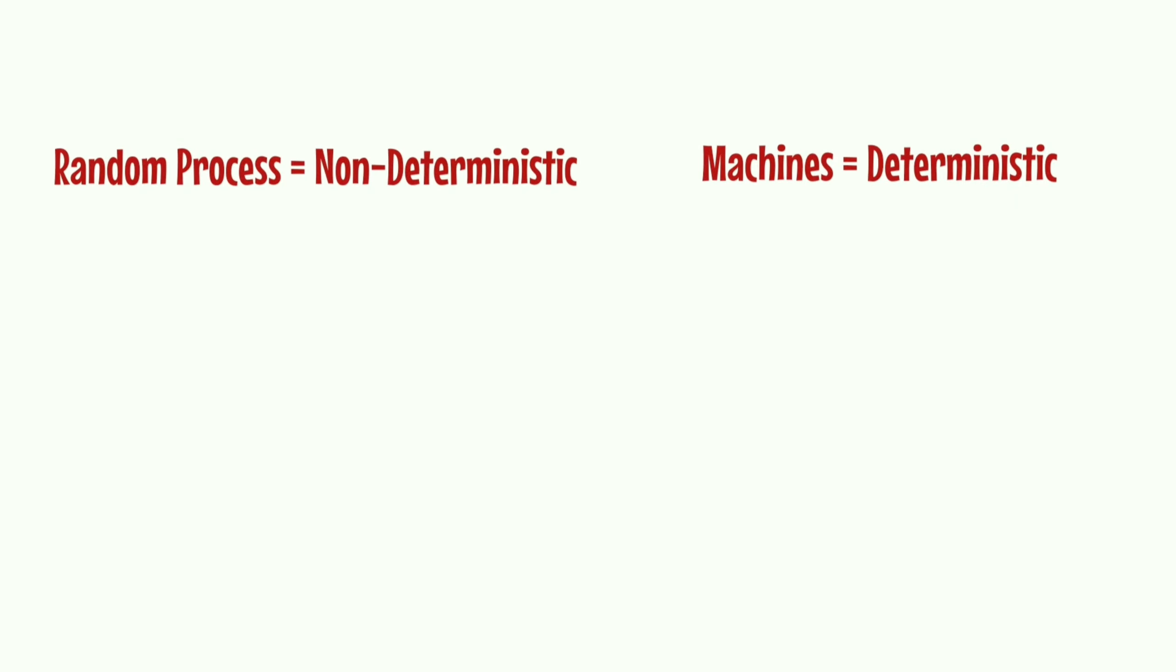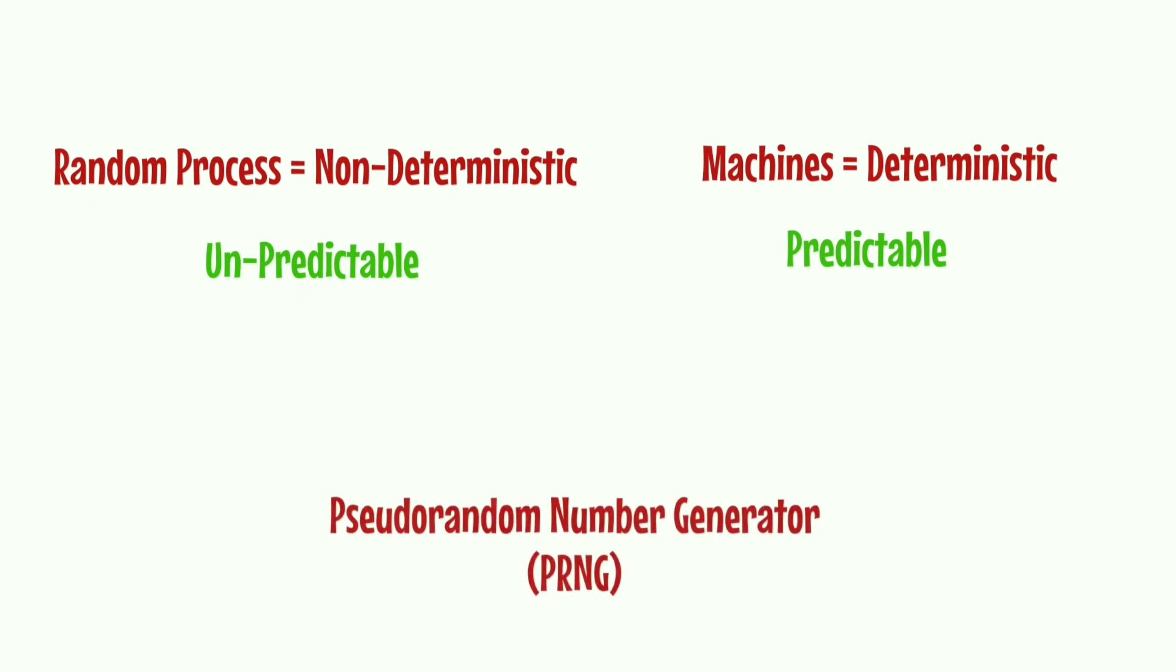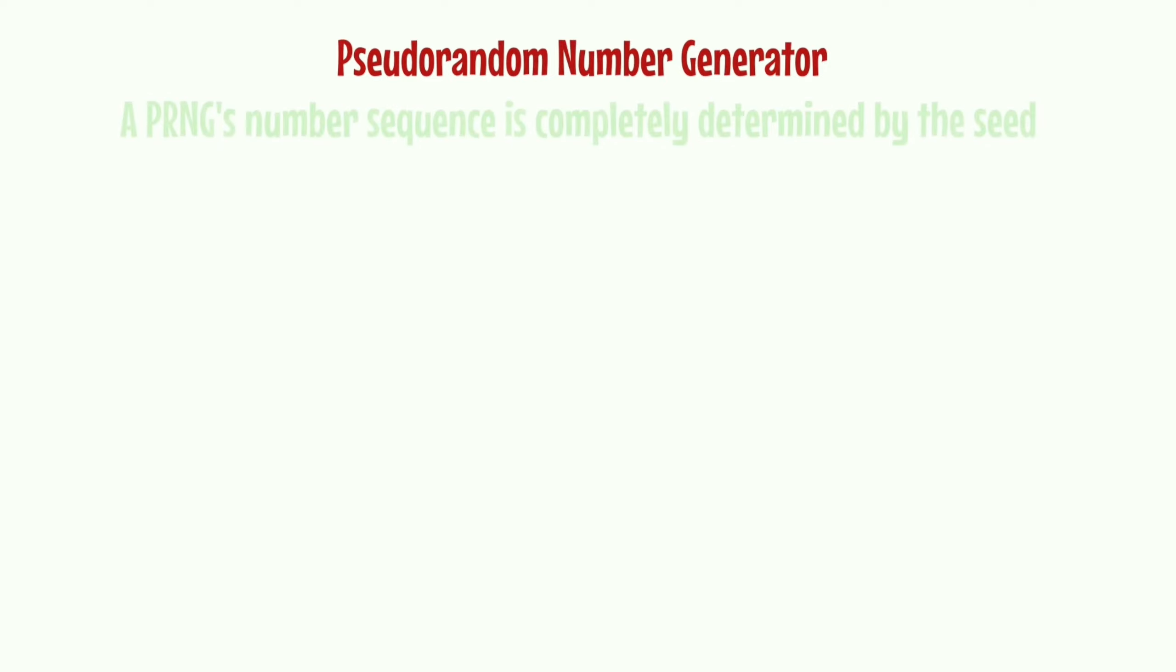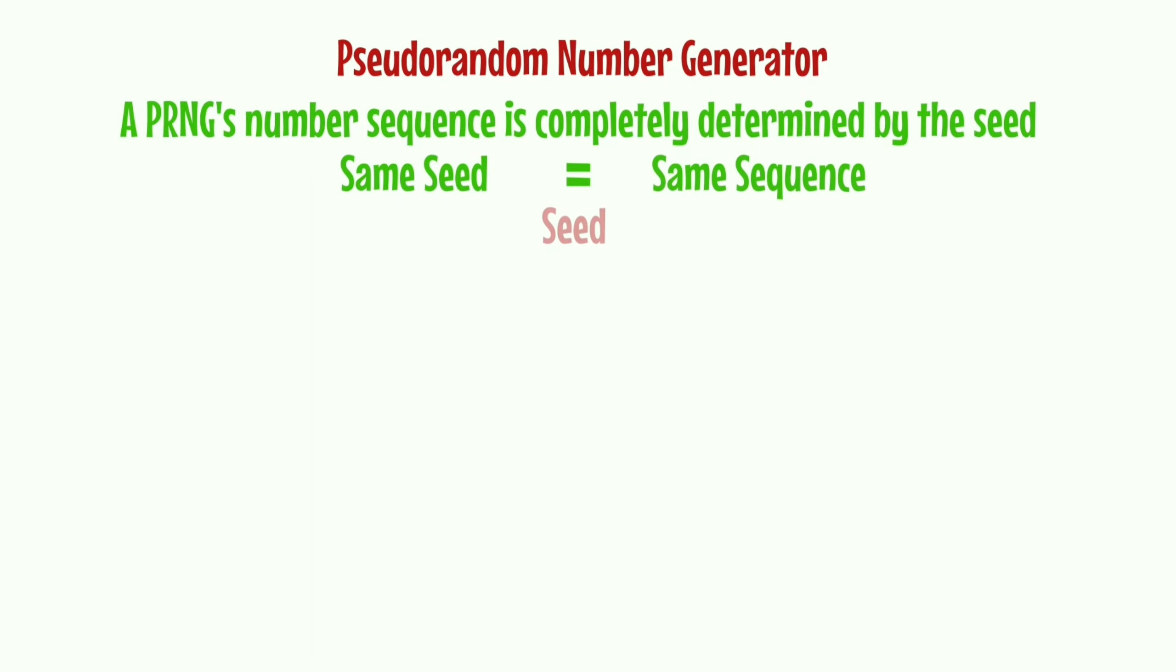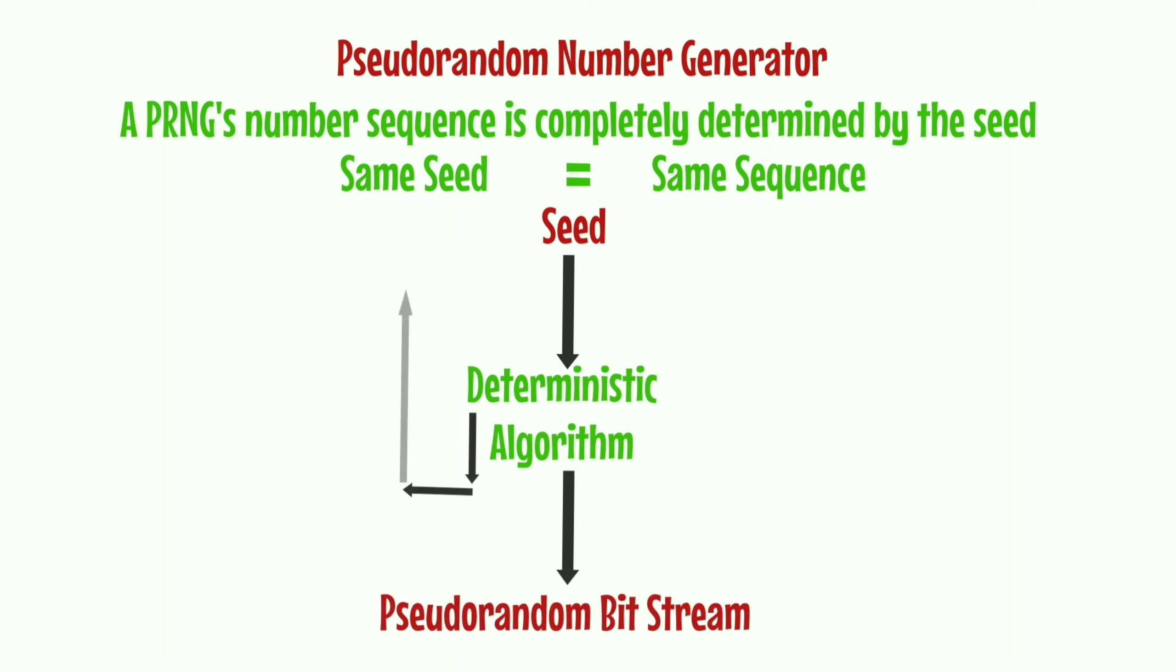Random process equals non-deterministic, unpredictable. Machine equals deterministic, predictable. Pseudo random number generator, PRNG. A PRNG's number sequence is completely determined by the seed. Same seed equals same sequence. Input is a fixed value called seed. An algorithm that is used to produce an open-ended sequence of bits is called PRNG. This deterministic algorithm continues and goes on until the required number of bits is generated.